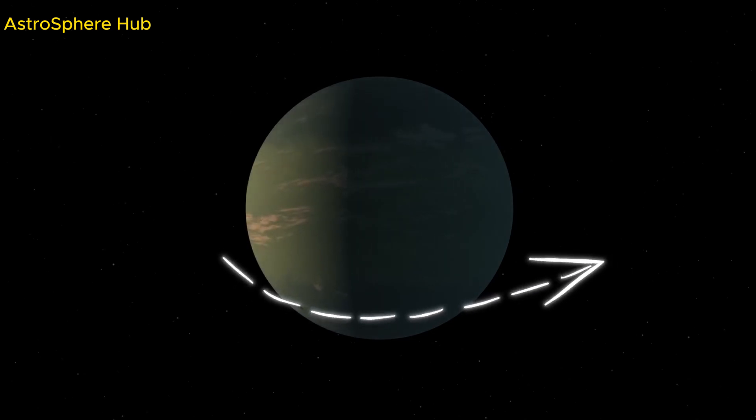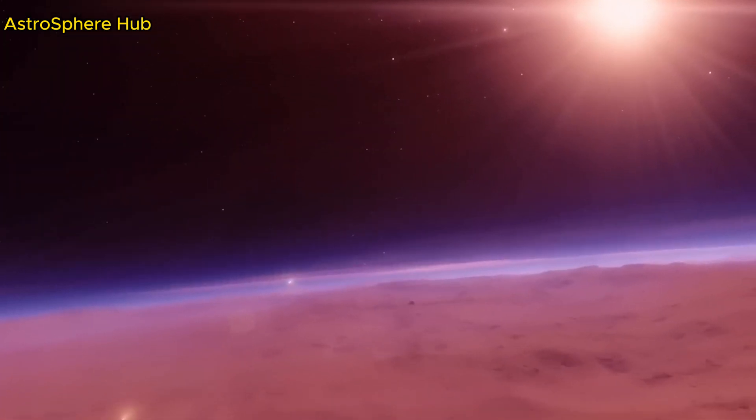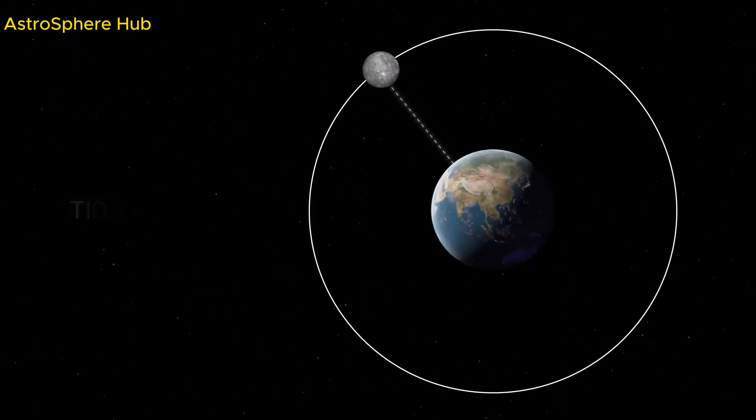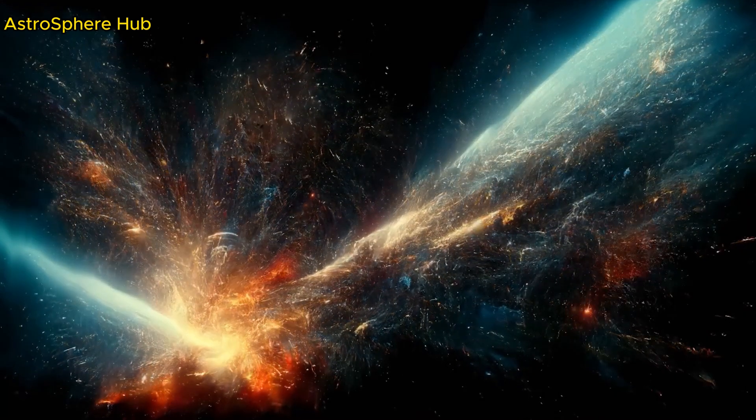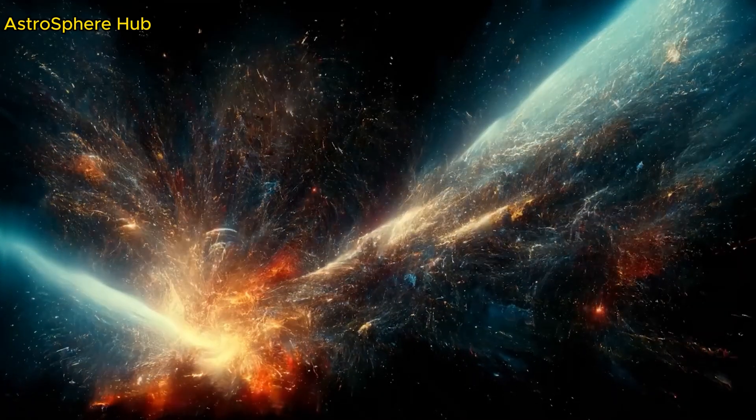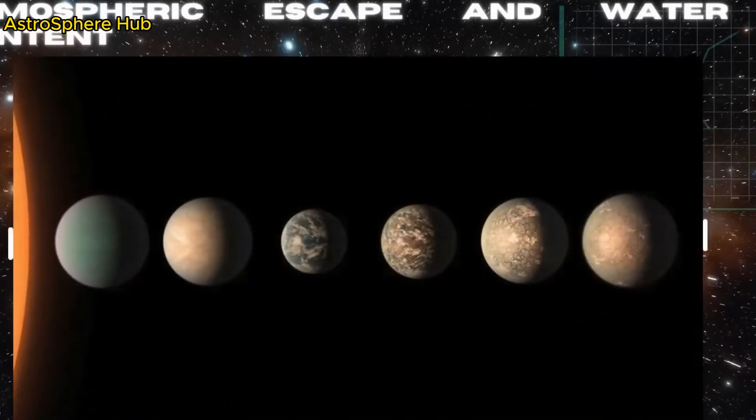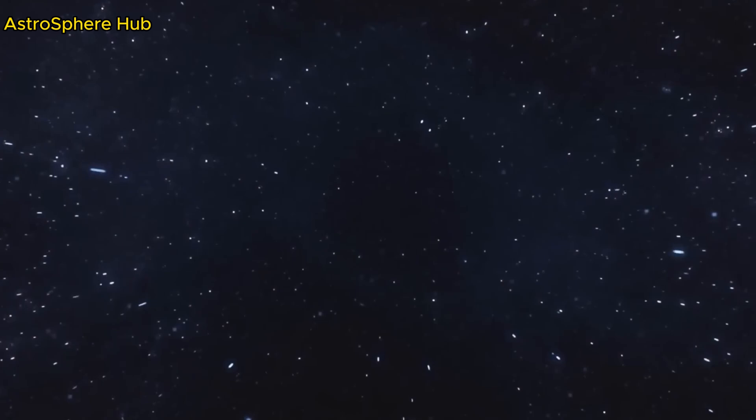Recent observations showed that the closest planet to the star in the TRAPPIST-1 system either has a very thin atmosphere or none at all, and it's most likely a bare rock. This innermost planet called TRAPPIST-1b is a scorching hot rocky world. With a blistering surface temperature of 450 degrees Fahrenheit, 230 degrees Celsius.